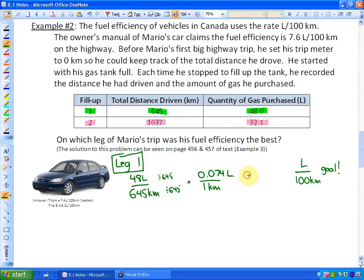And if we want to know how many liters it takes for 100 kilometers we could just times the entire thing by 100. So if I times that by 100 I will have 7.4 liters per 100 kilometers.